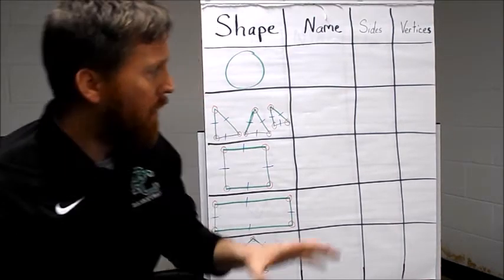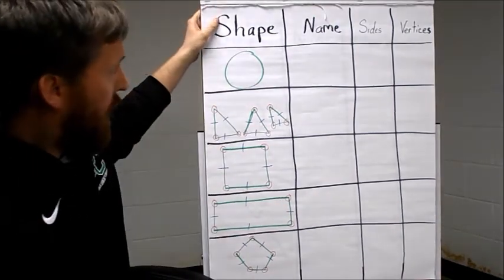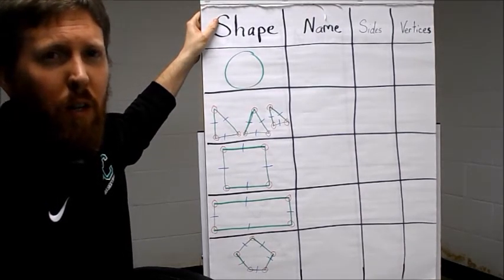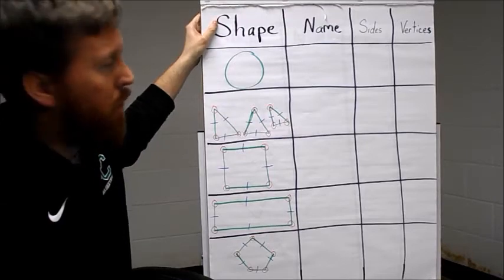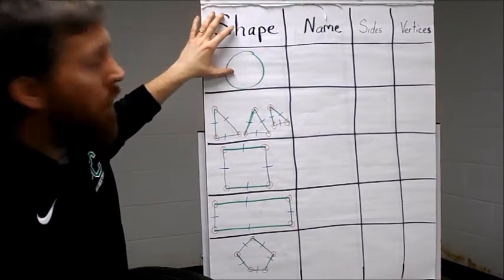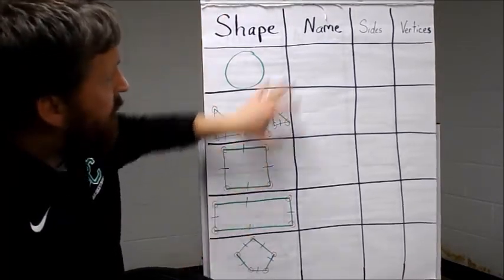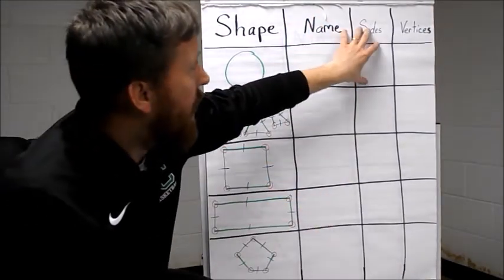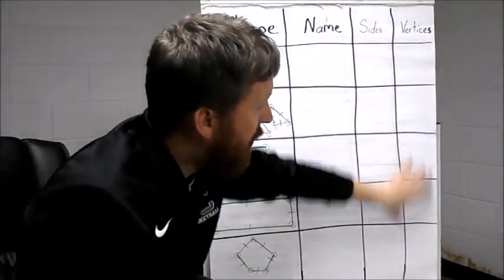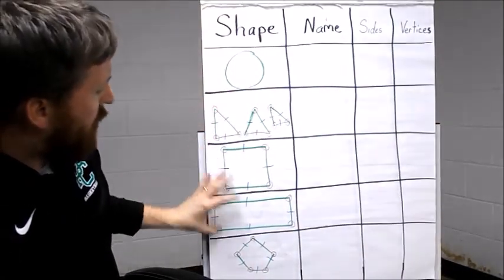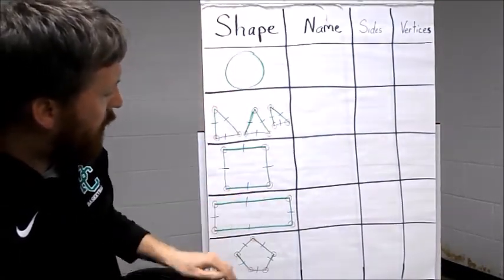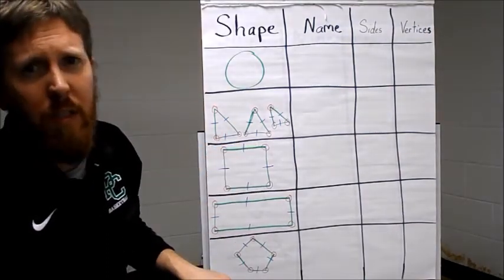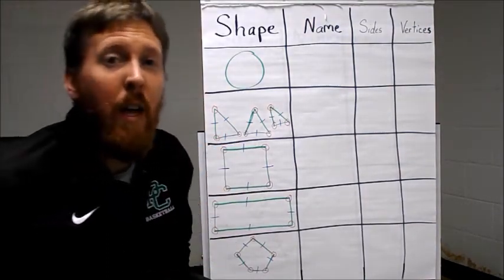Let's look at some different two-dimensional shapes. Up here I have a table that we're going to use to characterize our different two-dimensional shapes. Off to the left we have the shape itself; the next boxes are for the name of the shape, how many sides, and how many vertices. I do have some drawings in red and blue on our particular shapes that I'll talk about in a second.